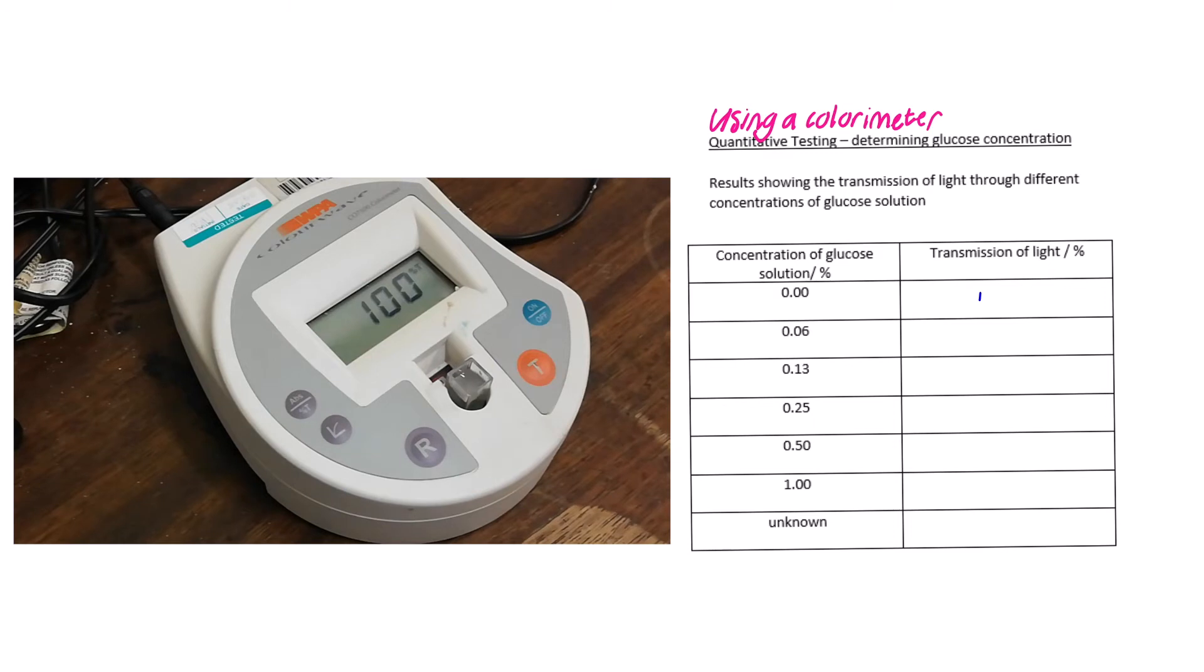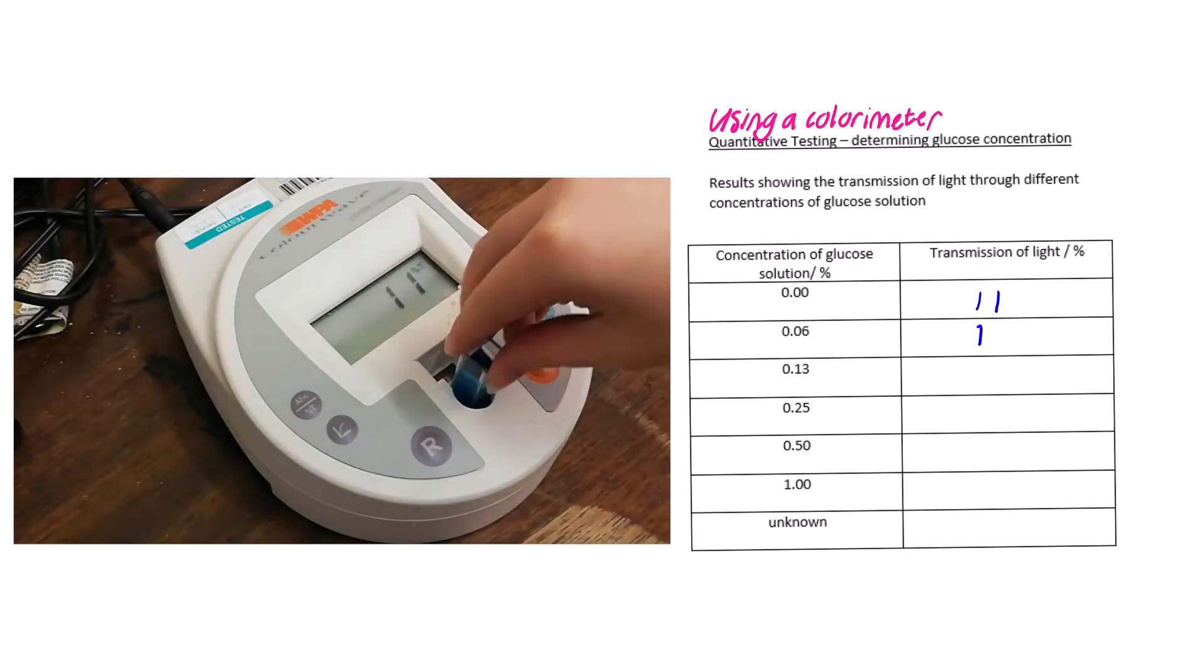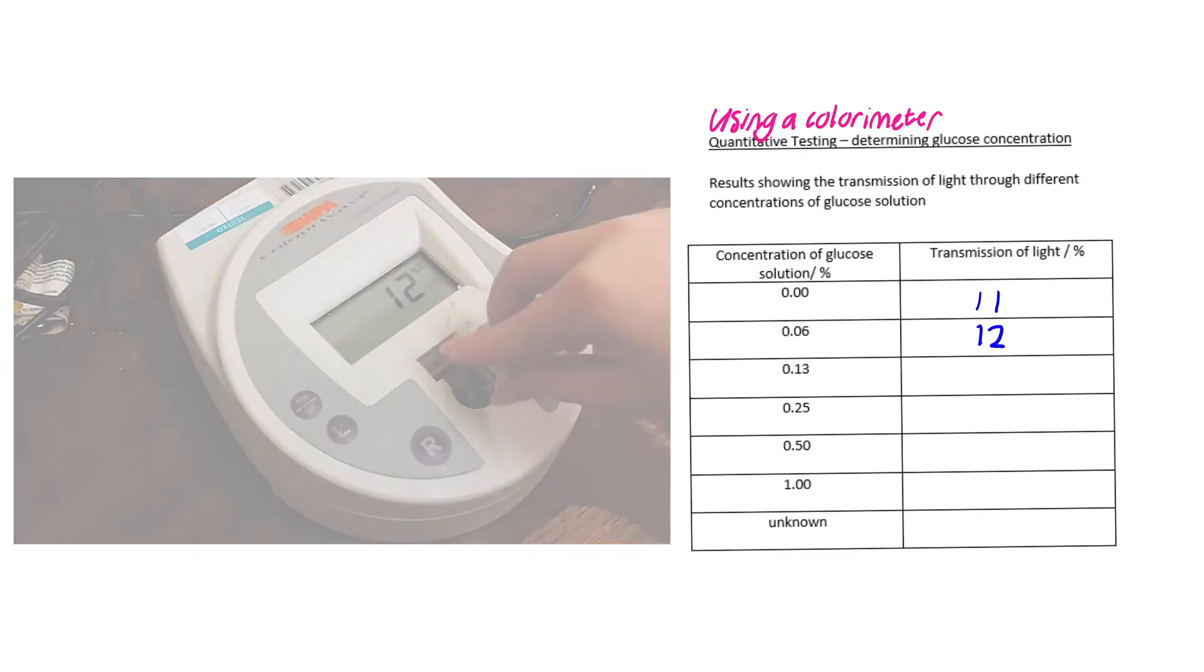Now you don't need to do that again. You now need to measure the percentage of light that passes through each concentration. So put the 0% into the colorimeter and press T, record your result. Then 0.06%, press T and record your result, and continue for all the concentrations including the unknown.